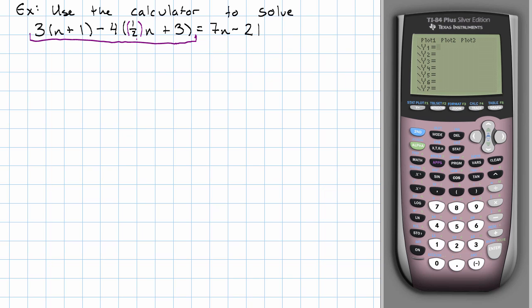So we've got 3 times x plus 1 minus 4 times 1 half is in parentheses, x plus 3.